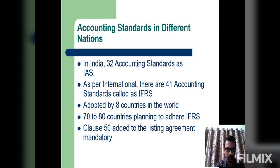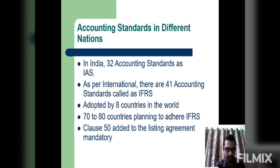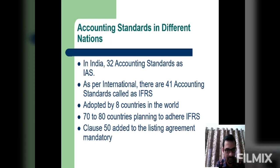In India, there are 32 Accounting Standards called IAS — Indian Accounting Standards. As per international standards, there are 41 Accounting Standards called IFRS — International Financial Reporting Standards — and also 14 Accounting Standards under IAS internationally.